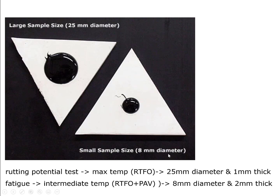When we use this test to evaluate the rutting potential, the sample needs to go through a short-term aging process, so we need to use the rolling thin film oven test to age the sample. When we use this test to evaluate the fatigue potential, the sample needs to go through both the short-term aging and the long-term aging processes, so we need to do the rolling thin film oven test and then the pressure aging vessel on the samples.